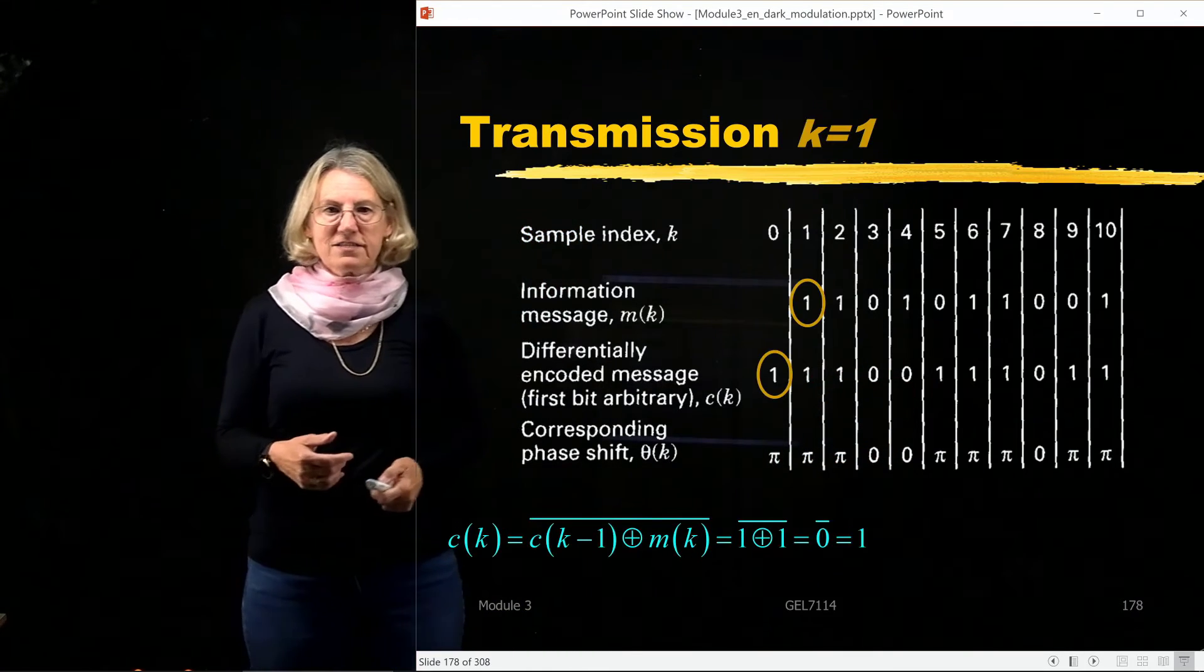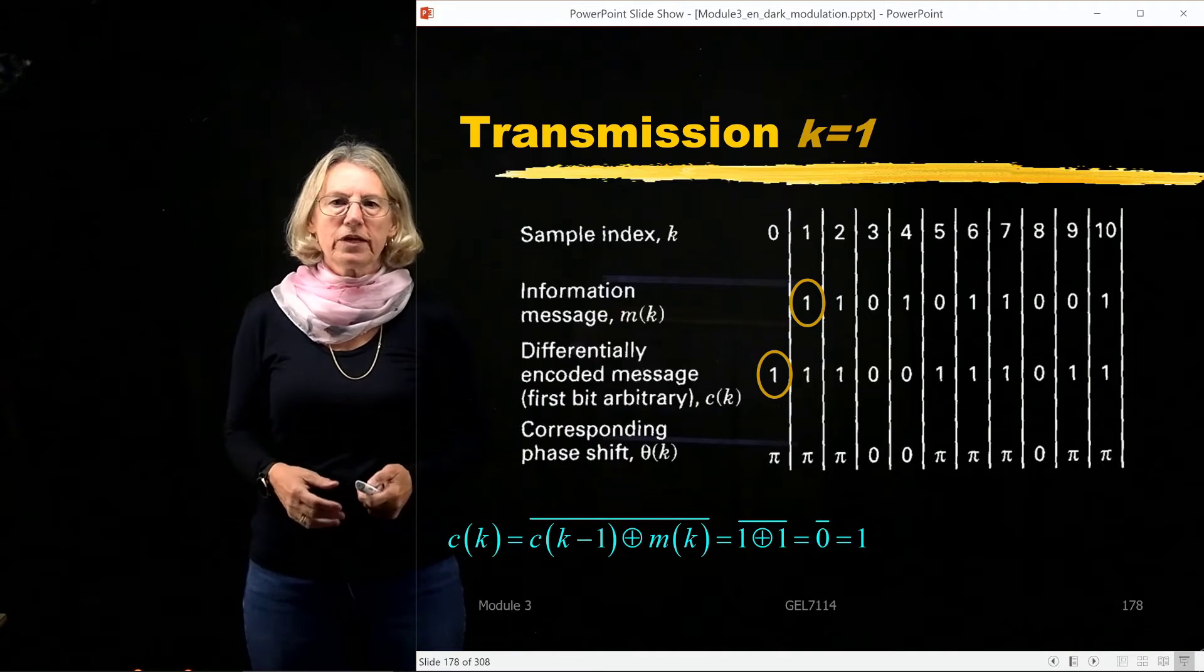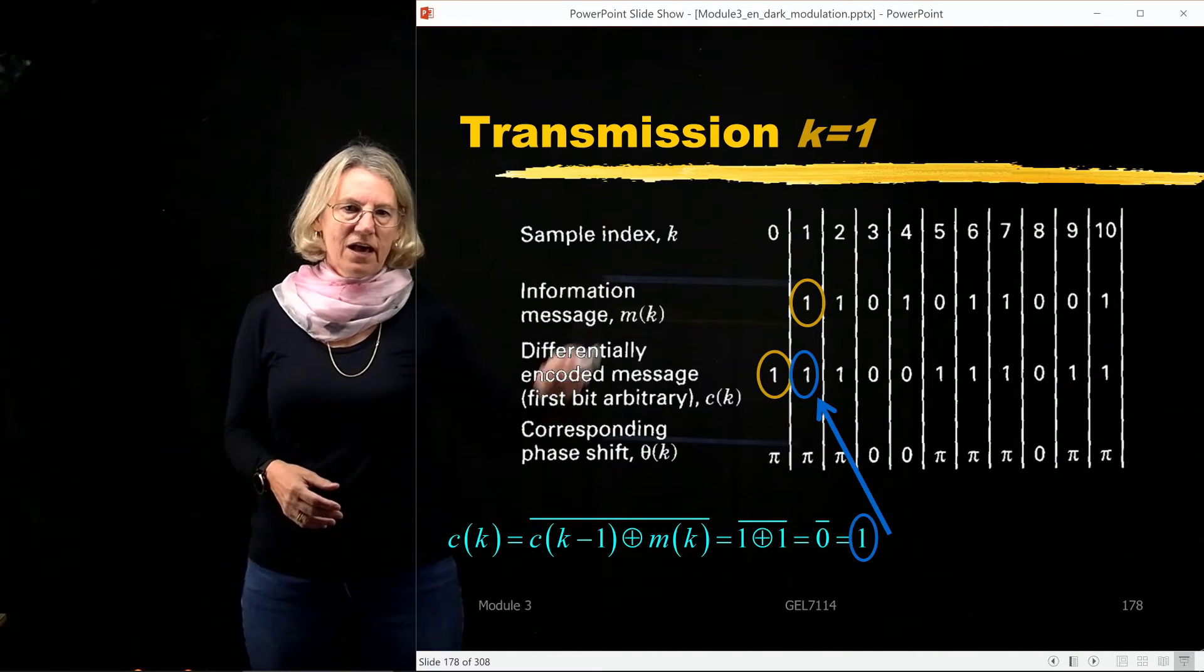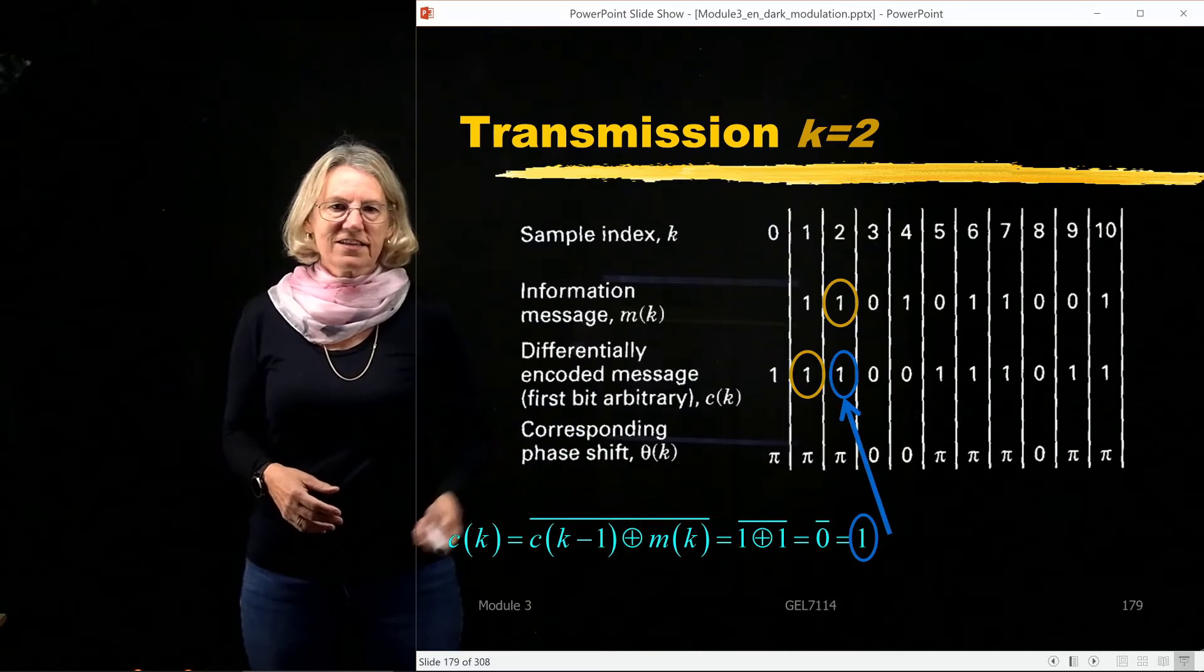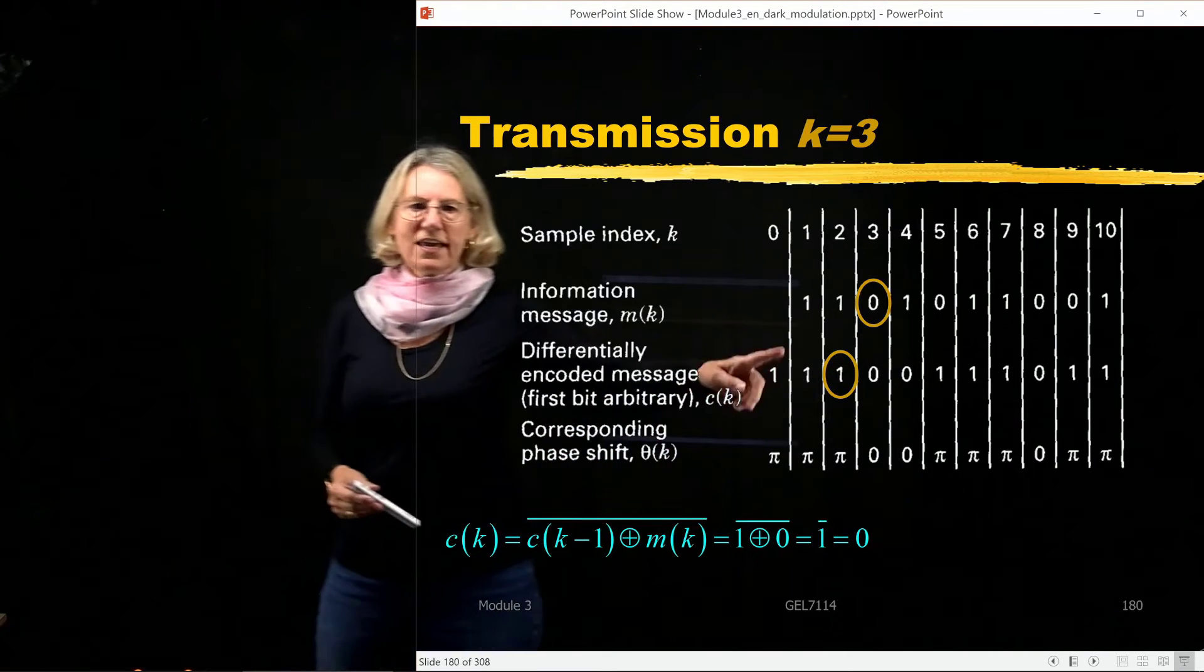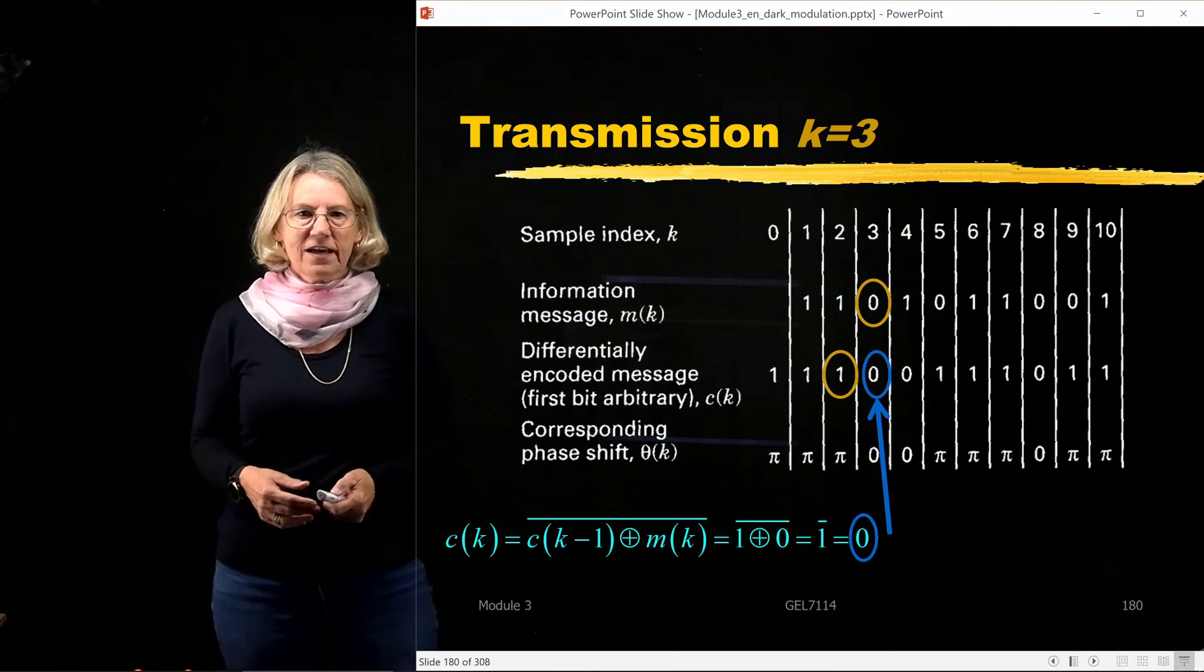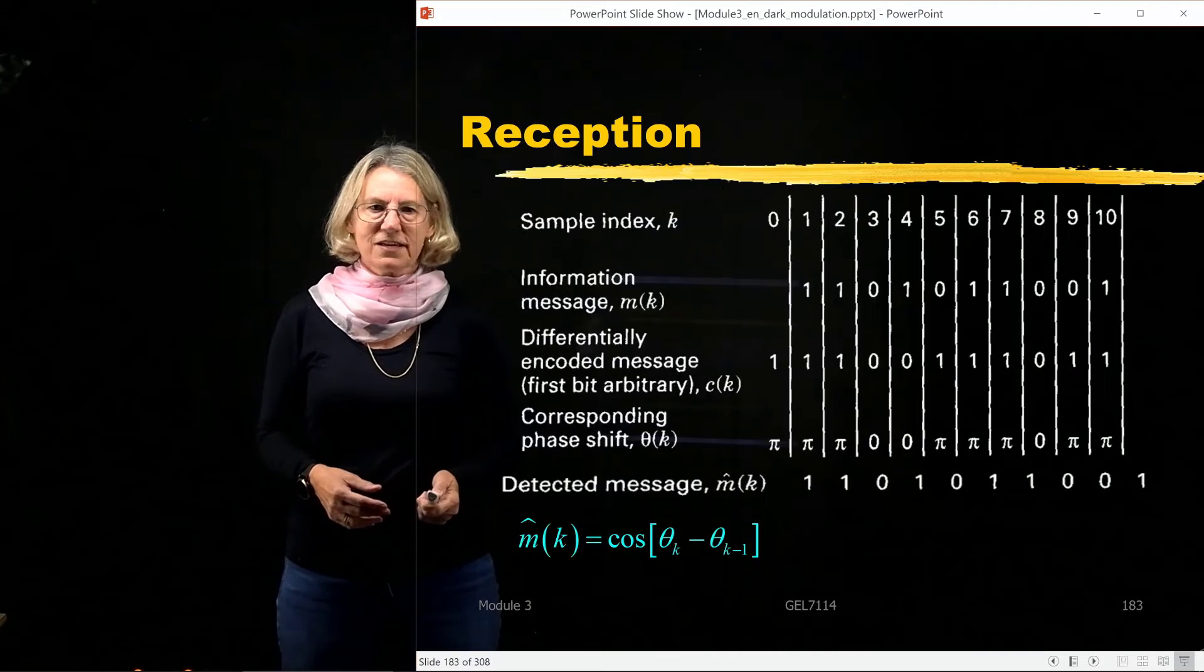So the tricky part is, you know, going through this operation, because it's taking the previous bit and putting in the operation with the current bit in order to get this coded sequence.